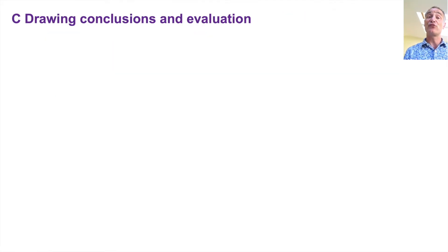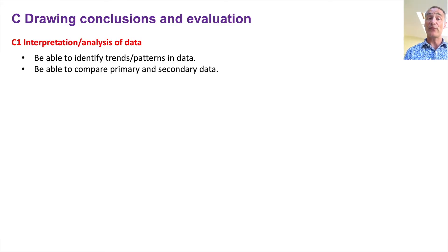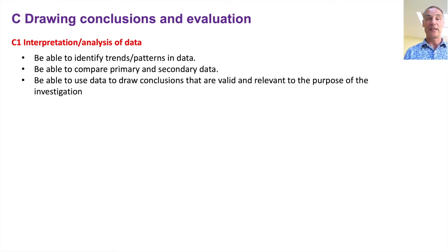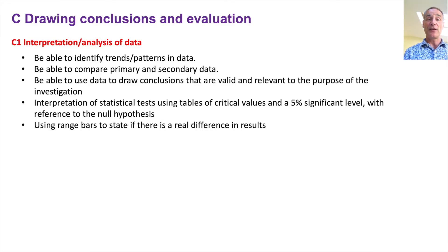Finally, the last thing is to draw conclusions and evaluation. You need to be able to identify trends and patterns in the data. You need to be able to compare primary data and secondary data — taken by somebody else — to look at how reliable they are. You need to use the data to draw conclusions that are valid and relevant to the purpose of the investigation. Part of interpreting data is to see whether the null hypothesis is accepted or rejected — so null hypothesis means you don't think there's any difference between two different sets of data. You'll also be looking at range bars, which are also standard deviation bars, to tell if there's a real difference in results.